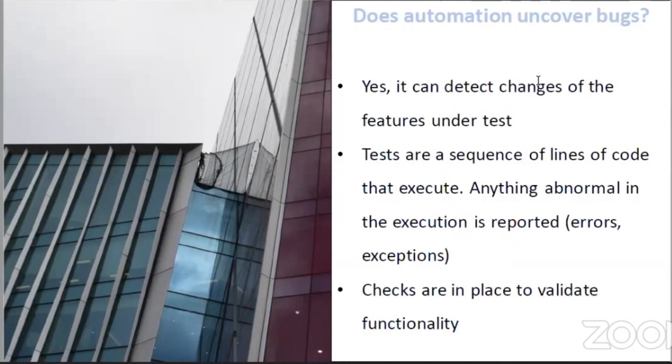The test is going to say, oh, I cannot click on the button because there is a popup there. So this is how you catch the bug. It will not catch, for example, a bug when something that you're not testing has changed.